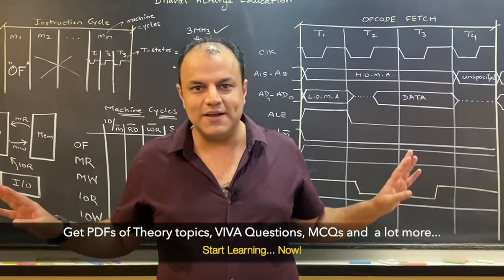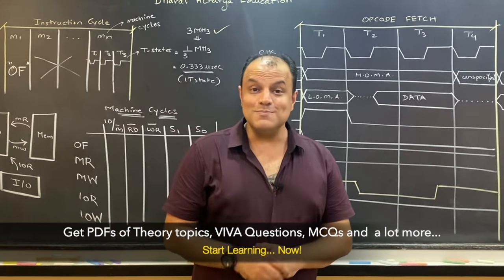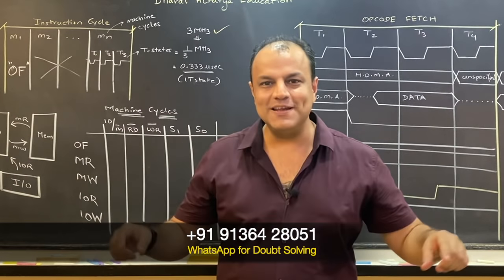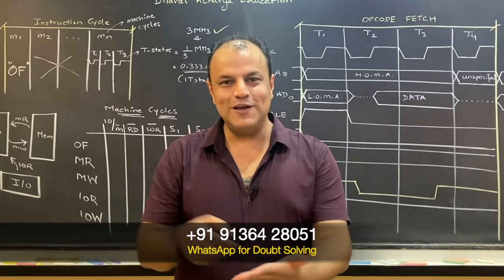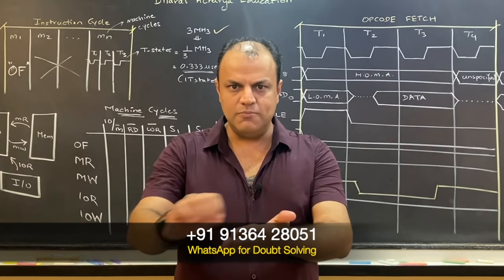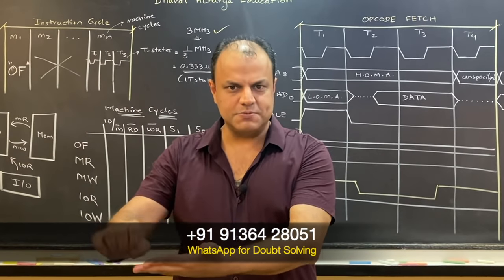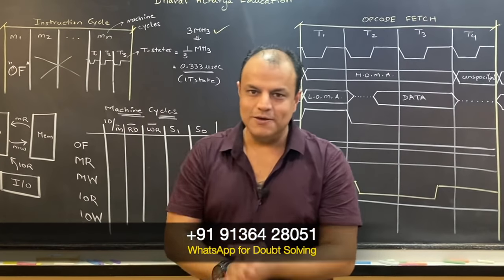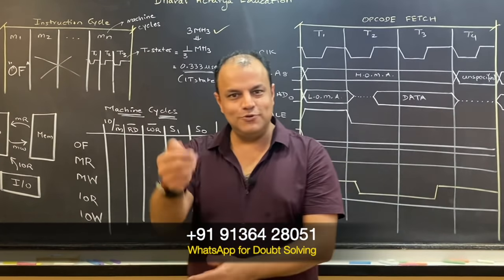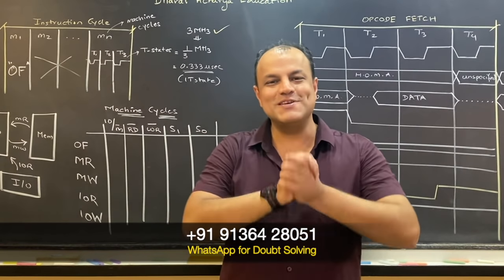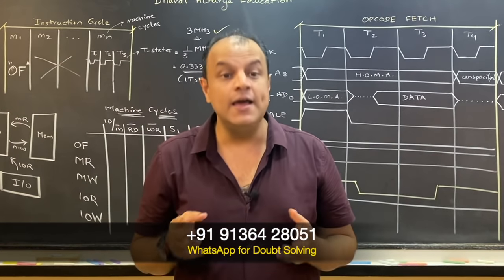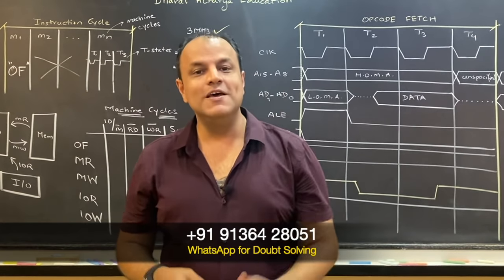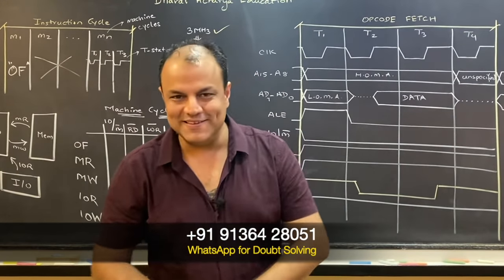Most importantly, you get direct access to me. This is my WhatsApp number. Whenever you have a doubt, take your phone and message me. First give me your name and subscription ID so I know you're my student. Your name gets saved on my phone. After that you will always get a reply — maybe not immediately if I'm busy shooting, but by end of day I always reply.